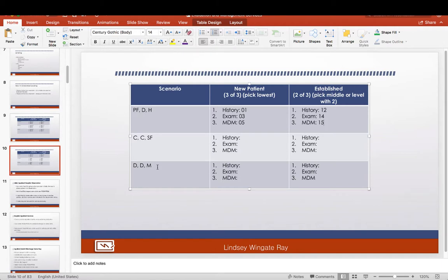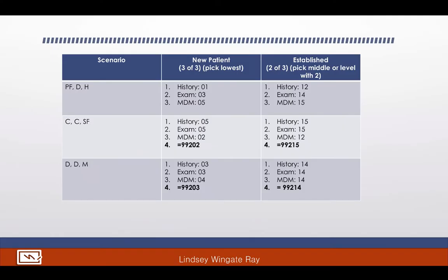Pause this video and do the next two scenarios yourself, then check your answers. For the first self-practice scenario — comprehensive, comprehensive, straightforward — new patient results were 05, 05, 02, so you go to the lowest: 99202. For established, results were 15, 15, 12, so go with the two that match: 99215. For the second scenario — detailed, detailed, moderate — new patient results were 03, 03, 04, so the lowest matching pair gives 99203. For established, all three were 99214, so the code is 99214.